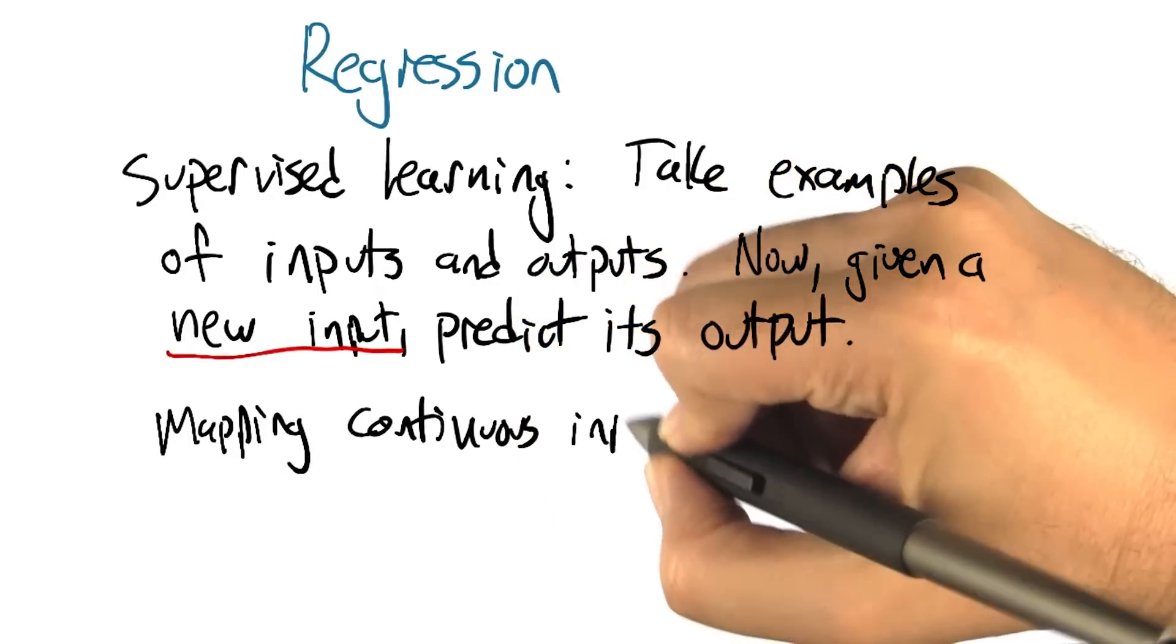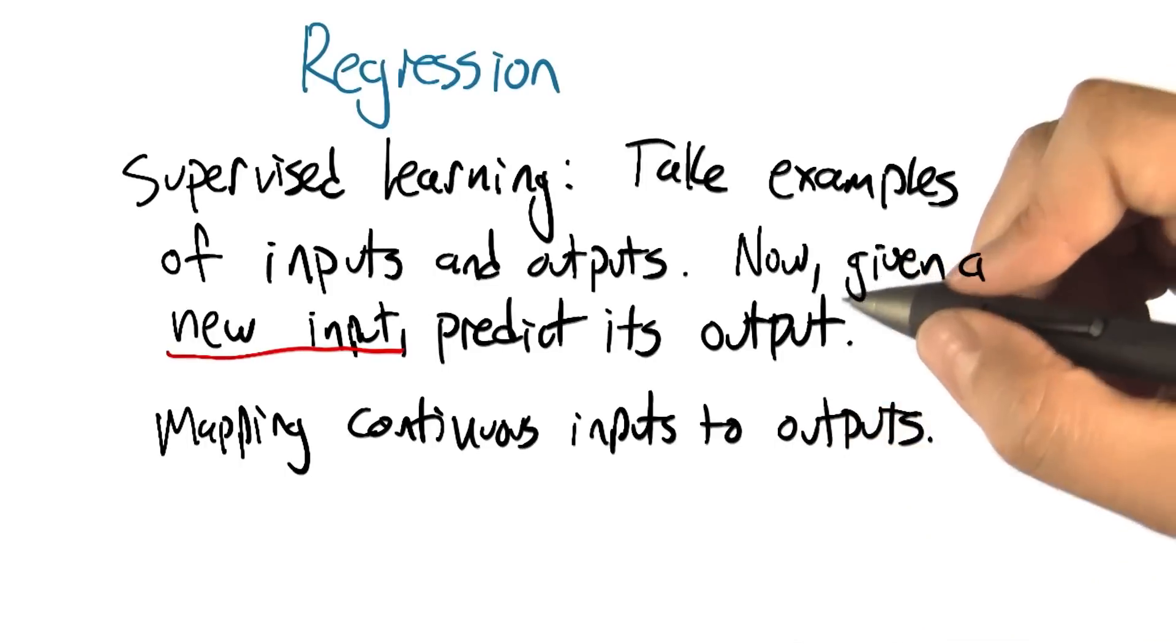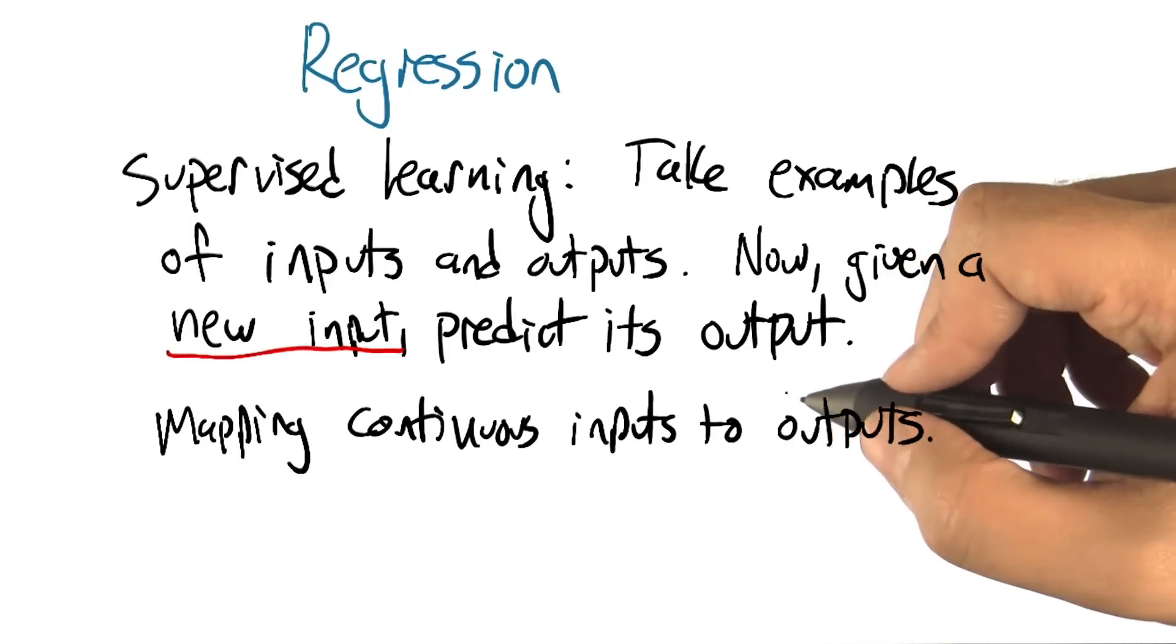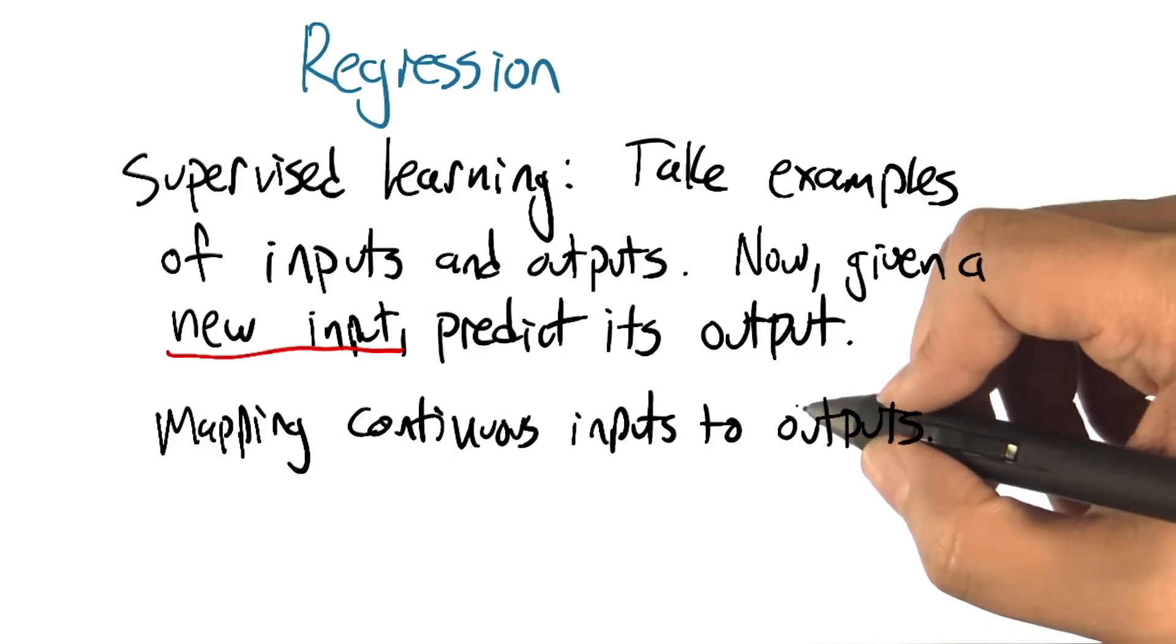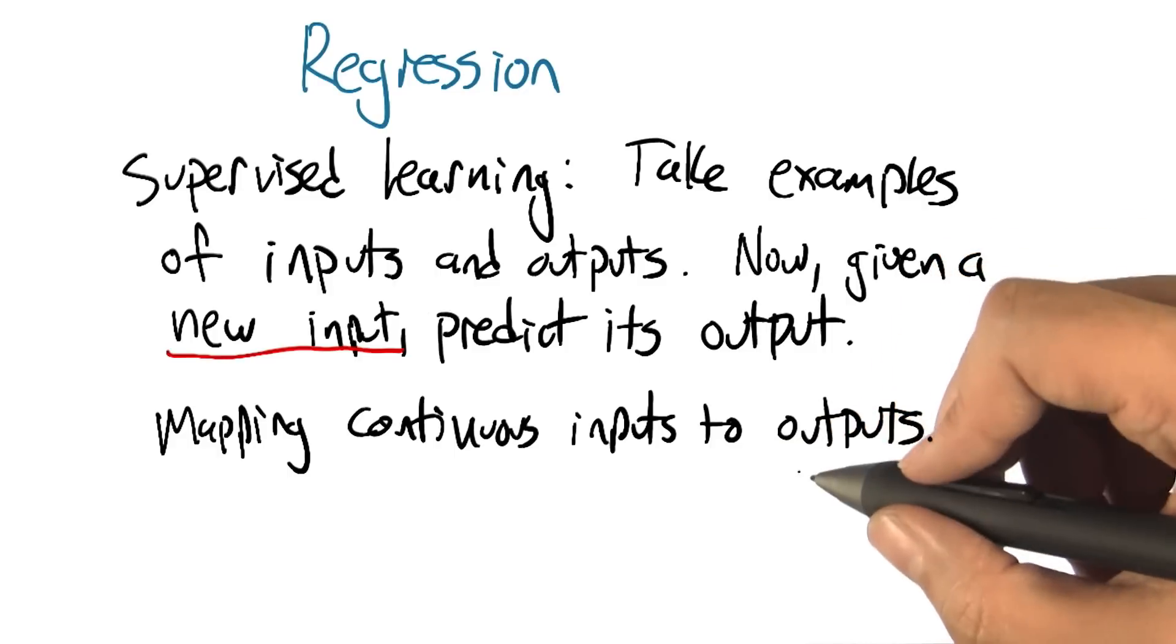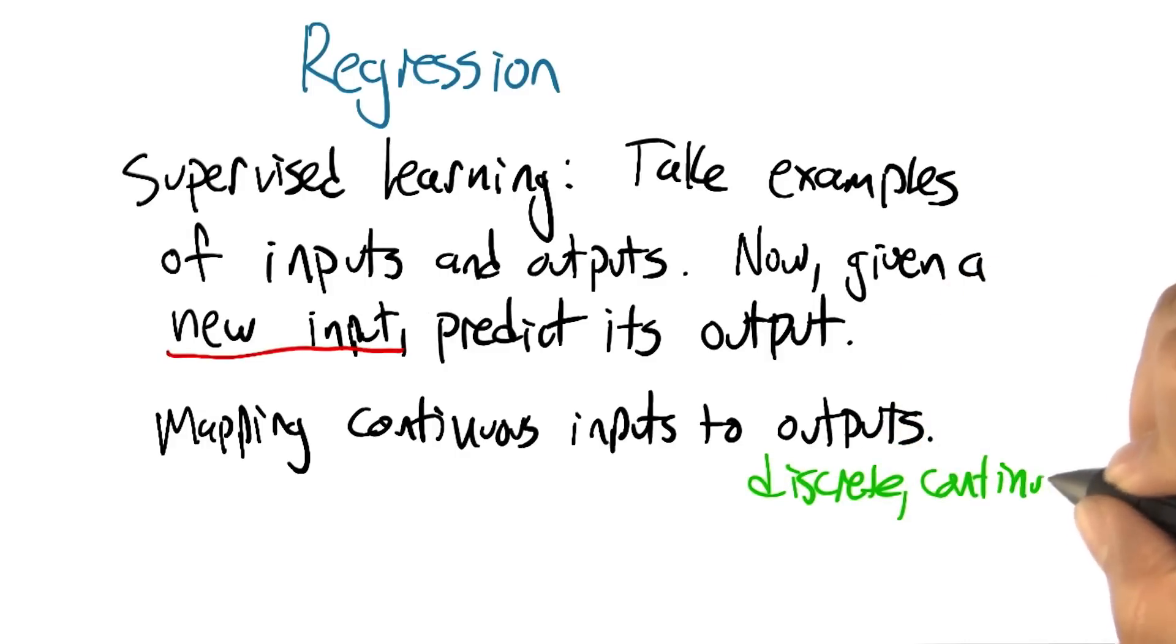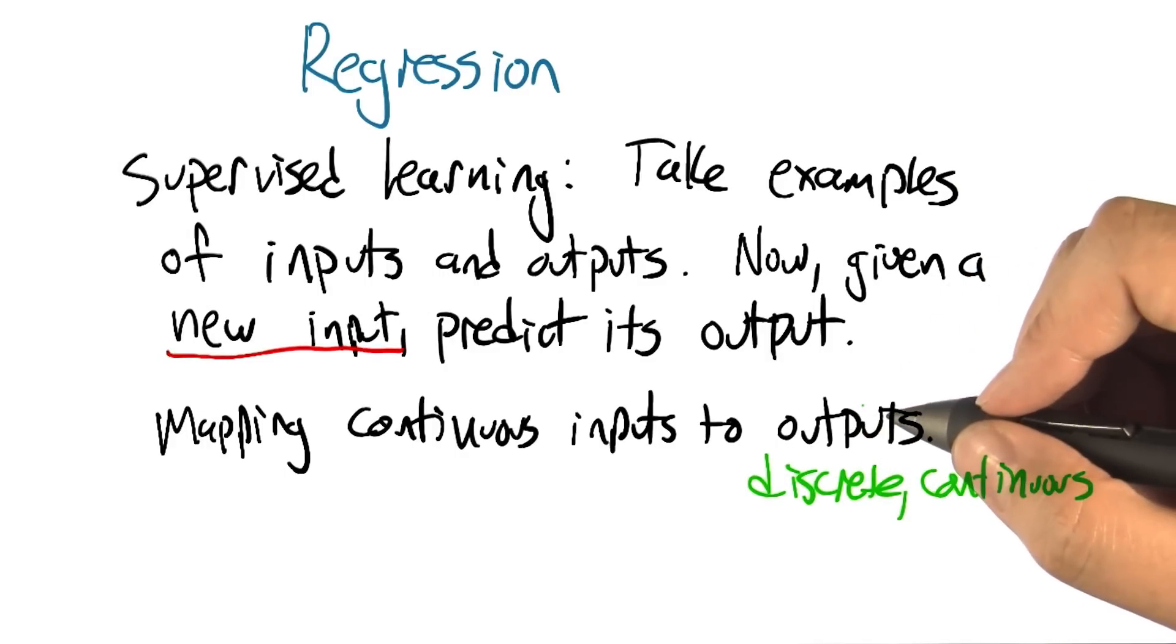Now, what makes regression a special subtopic? We're going to be talking about mapping continuous inputs to outputs. As opposed to, what was the other thing that we were mapping? What other kinds of outputs did we think about? Well, we had discrete outputs and continuous outputs. And so this is going to be the focus on continuous.